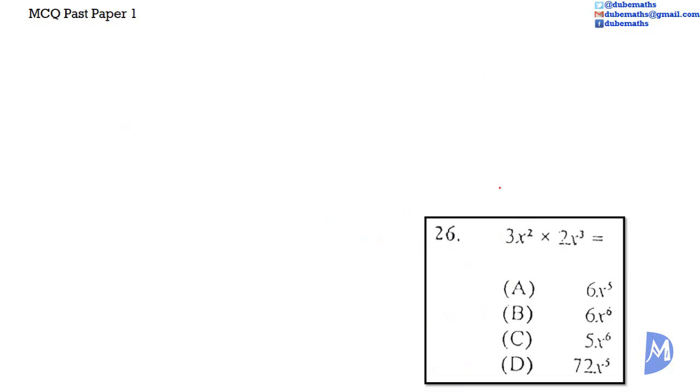Question 26. 3x squared multiplied by 2x cubed. This is the same as 3 multiplied by x squared multiplied by 2 multiplied by x cubed. Which is the same as grouping the numbers together.